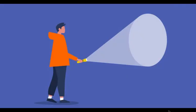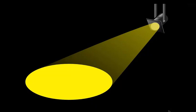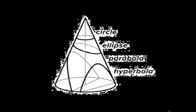If the flashlight is pointed straight toward us, the flashlight looks like a small circle, and the cone of light looks like a big circle. Keep this three-dimensional cone of light in mind — it will help us visualize the shapes as we slice a cone and form all four conic sections.